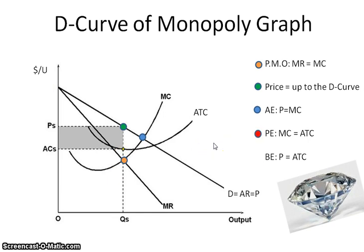Productive efficiency is producing goods as cheaply as possible. For that one, we're looking where MC equals ATC. A monopoly is never productively efficient. And lastly, you have the breakeven point, which is price equals ATC.